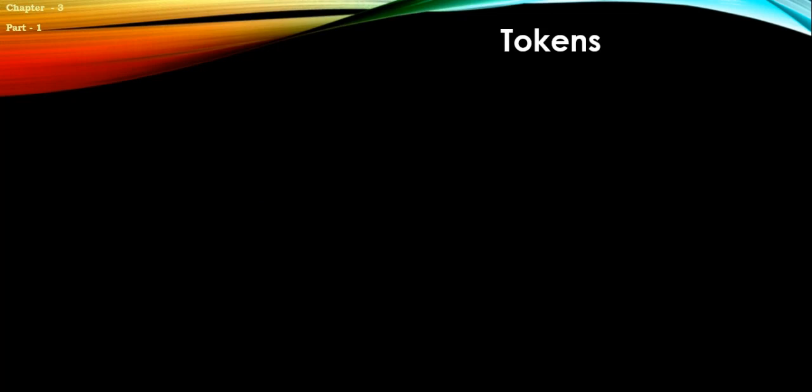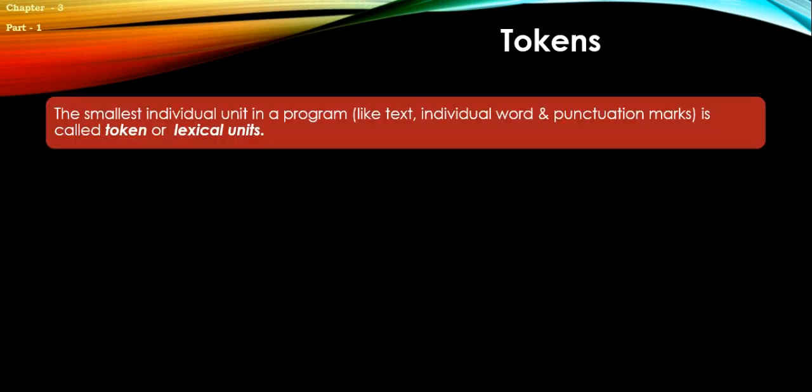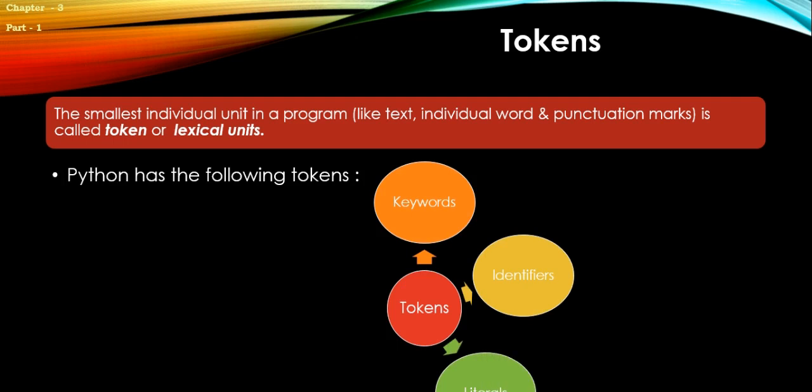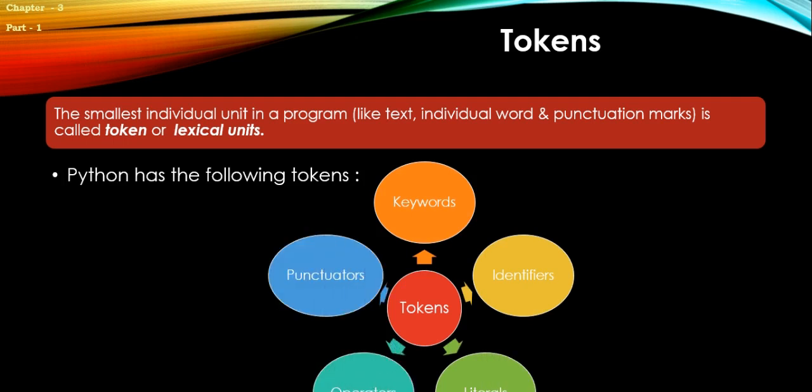Now let's understand tokens in Python. The smallest individual unit in a program, like text, individual word, and punctuation mark, is called a token or lexical unit. Python has the following tokens: number one, keywords; number two, identifiers; number three, literals; number four, operators; and number five, punctuators. These are combinedly called tokens.